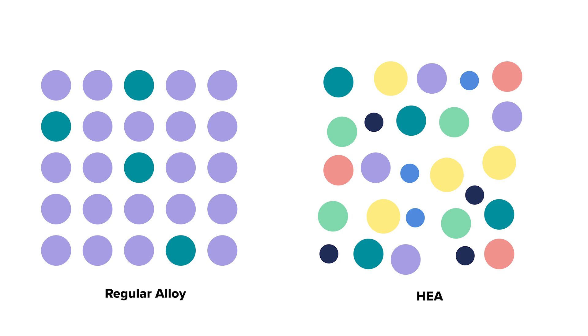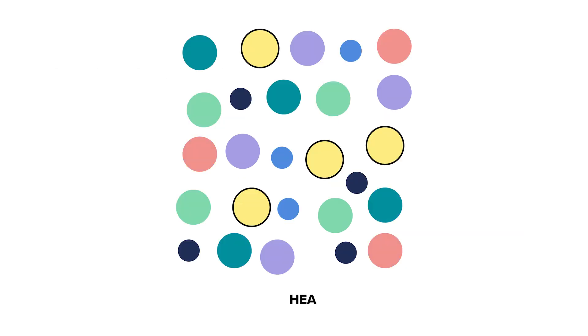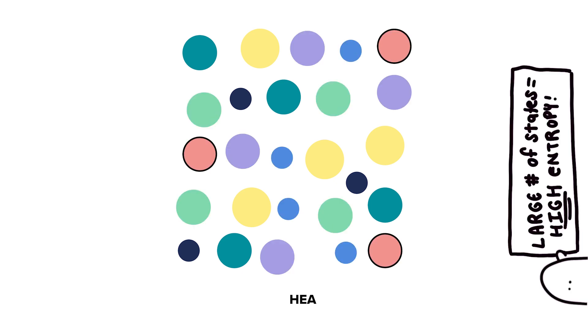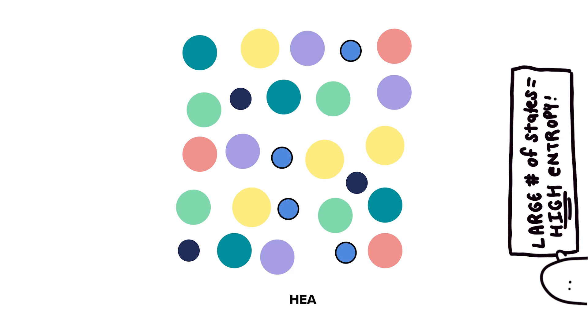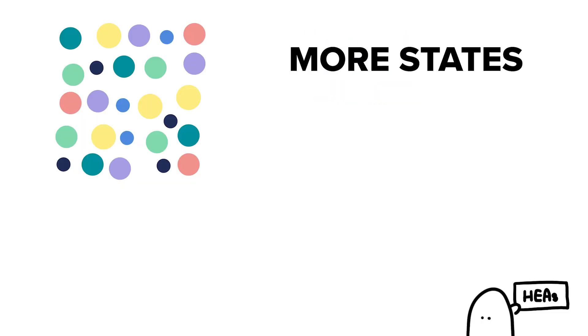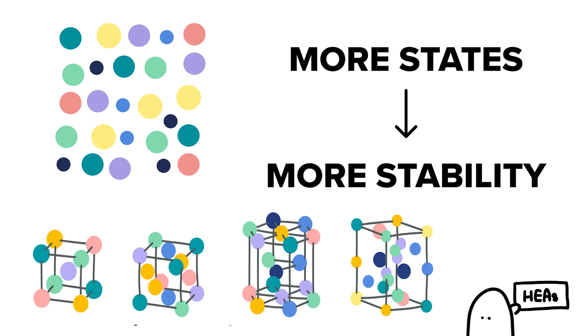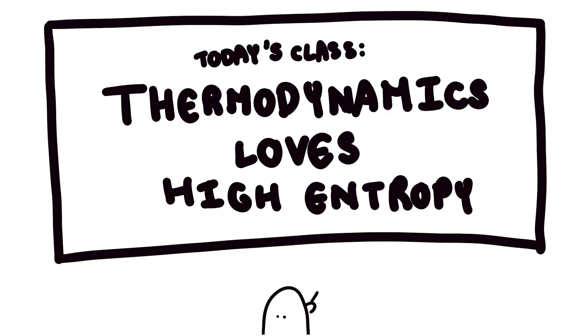The reason this works ties back to what we said about milk tea. Due to the presence of multiple types of atoms in similar proportions, the atomic arrangement is highly complex and disordered. This high degree of possible states significantly increases the entropy of the system. Thus, the system undergoes what is called entropic stabilization — meaning the increased entropy itself contributes to the stability of the alloy, because a state of high entropy is naturally favored in thermodynamics, and systems tend to move towards high entropy states.